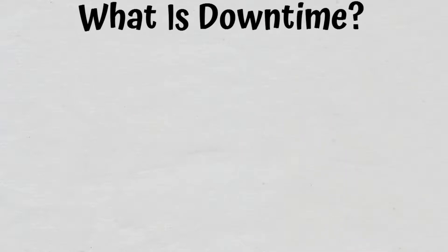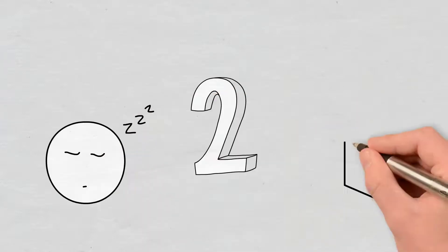What is downtime? There are two key behaviors that trigger slashing: downtime and double-signing.